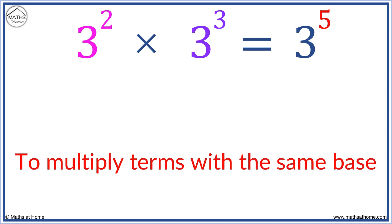We say that to multiply terms with the same base, we add their exponents. That is, 2 plus 3 equals 5.